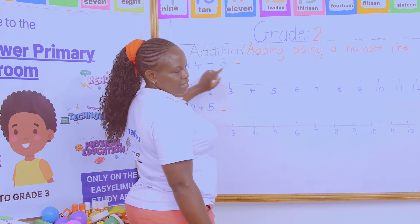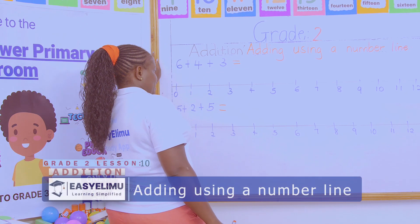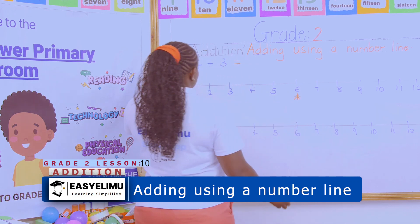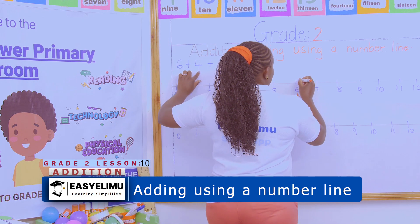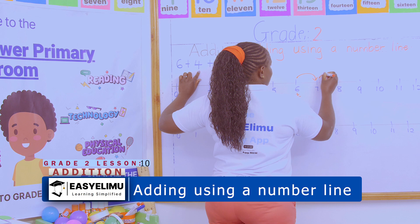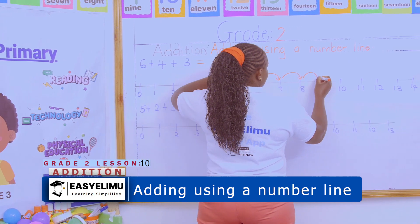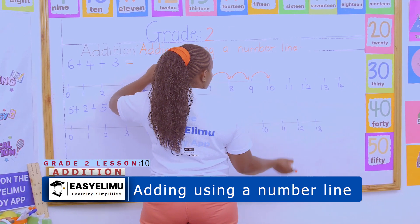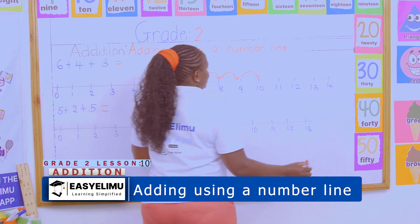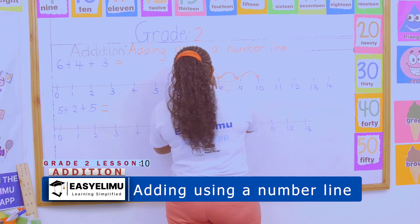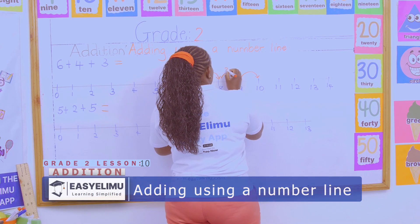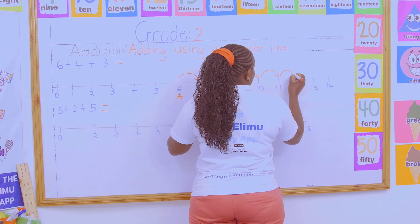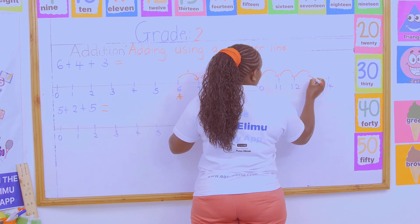For example, I've been told to add six plus four plus three. Which one is my starting number? My starting number is six. How many steps am I moving first? Four steps. So we have one, two, three, four.